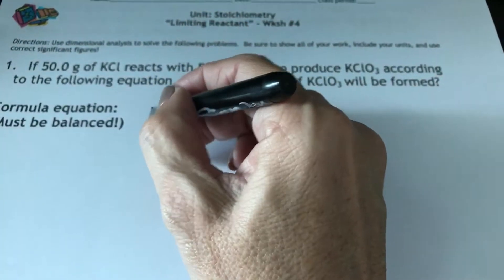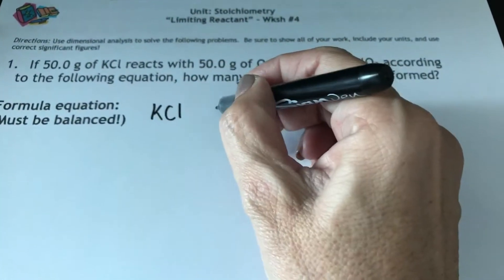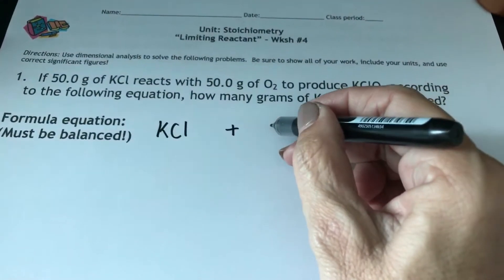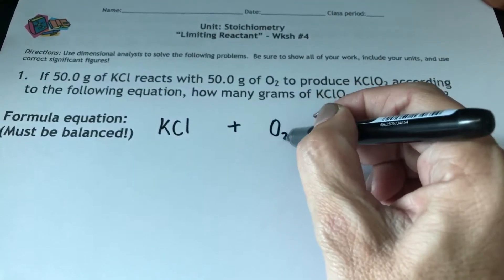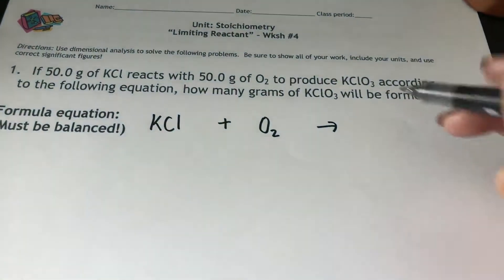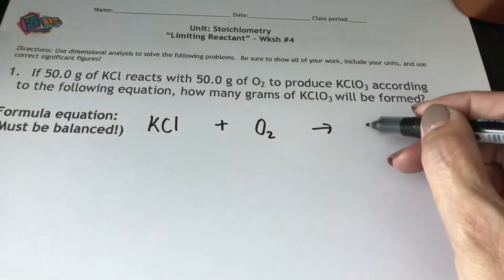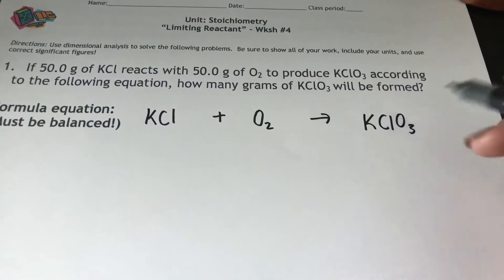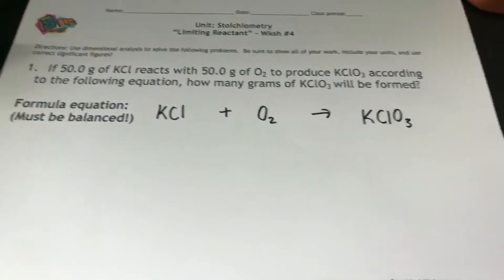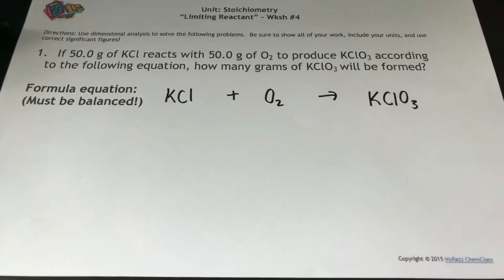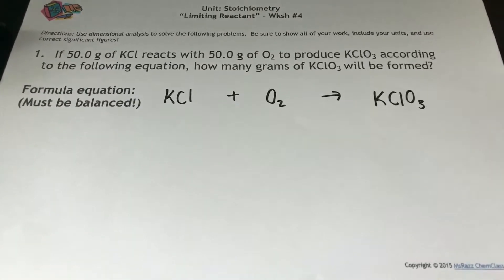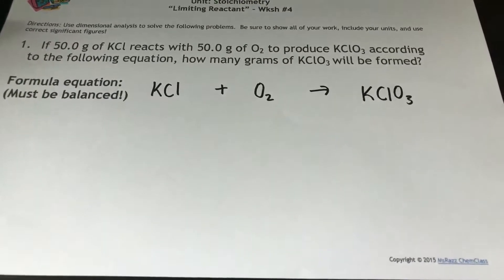I'm telling you that potassium chlorate reacts with oxygen and it forms potassium chloride. Obviously this is not a balanced chemical equation — I still have to balance it. So I go and start counting my particles.